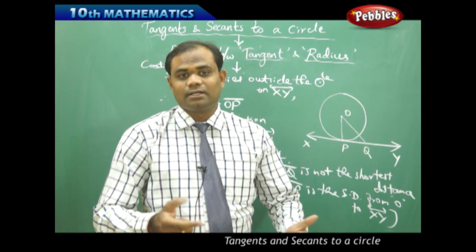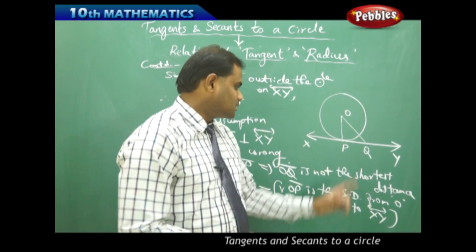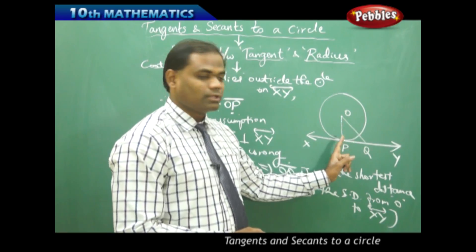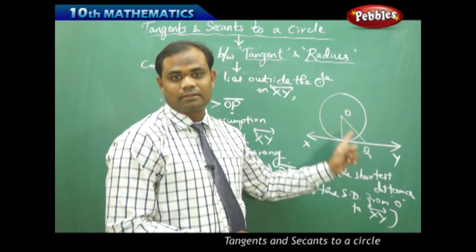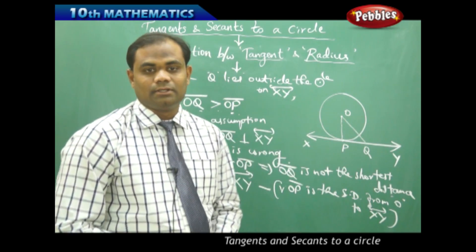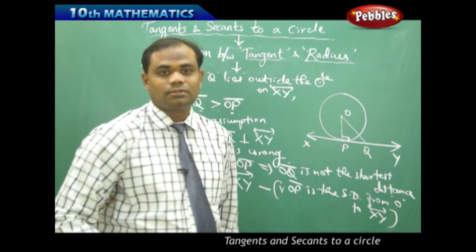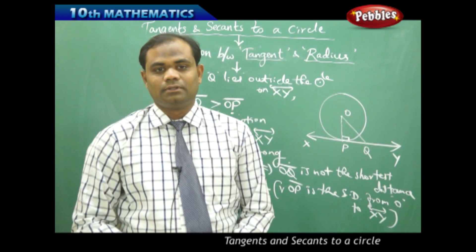So for any circle with center O, the radius passing through the point of contact must be perpendicular to the tangent. This is how we conclude the theorem — the proof by contradiction establishes that the tangent at any point of contact is perpendicular to the radius at that point.